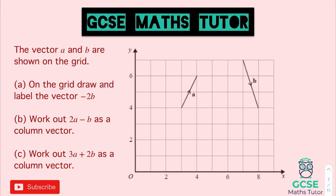For part A, draw and label the vector minus 2B. Vector B goes across 1 and down 3. We need to draw two of those in the negative version — so the arrow points in the other direction. Starting at the top: go along 1, down 3 — that gets us there — then across 1, down 3 again. We join those up, point the arrow in the opposite direction, and label that minus 2B.